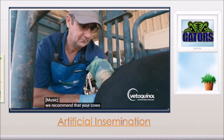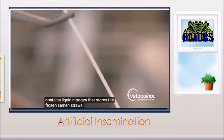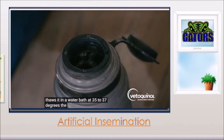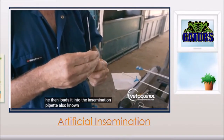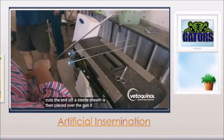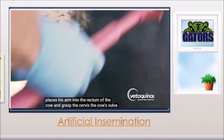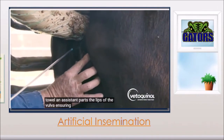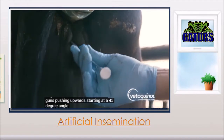We recommend that your cows are AI'd by an experienced technician. The AI tank contains liquid nitrogen that stores the frozen semen straws. The technician removes the straw from the tank and thaws it in a water bath at 35 to 37 degrees. The technician removes the straw from the water bath, dries it, and then loads it into the insemination prepair — also known as the AI gun — and cuts the end off. A sterile sheath is then placed over the gun. It is now ready to inseminate the cow. The technician places his arm into the rectum of the cow and grasps the surface. The cow's vulva is cleaned, ensuring a clean pathway for the AI gun. The technician inserts the AI gun, pushing upwards, starting at a 45-degree angle and ending horizontally.